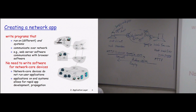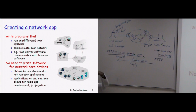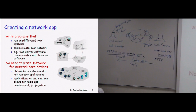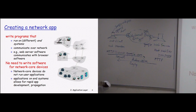A router contains the functionality of the network layer and even the data link layer and physical layer, because a router is a layer 3 device and takes care of layers 3, 2, and 1. Any device on a particular layer can work on that layer and the layers below it. A computer is a general purpose device — it can work starting from the application layer all the way down to the physical layer, which is why it is called a general purpose device.